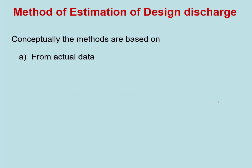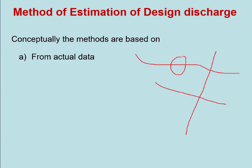How is discharge calculated? One of the best methods is using actual data. If you have sufficient recorded data for the last 50 or 100 years at the river crossing location, you can directly work out which discharge has a probability of occurring once in 50 years.